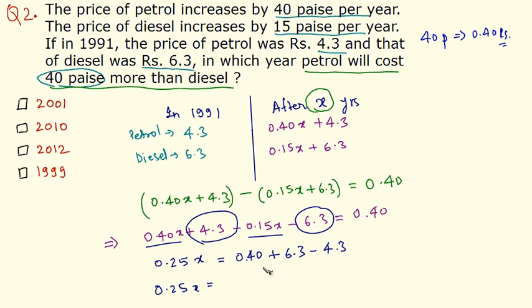So 0.25x equals 2.5. I have solved this already. So x equals 2.5 divided by 0.25.